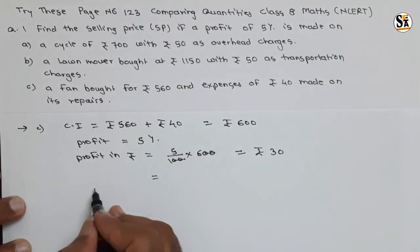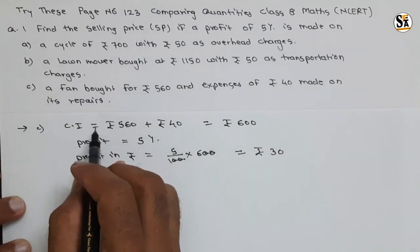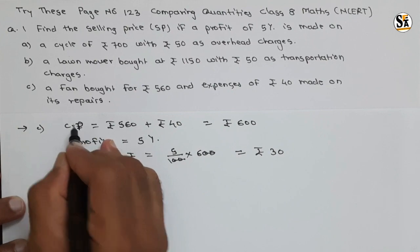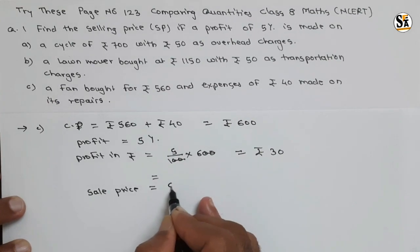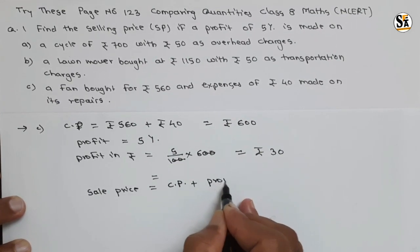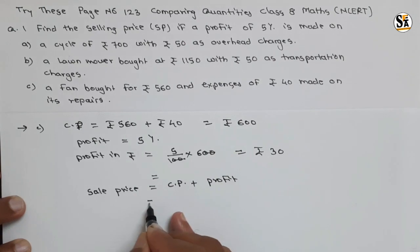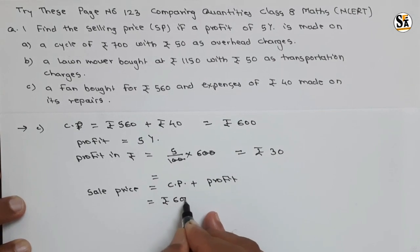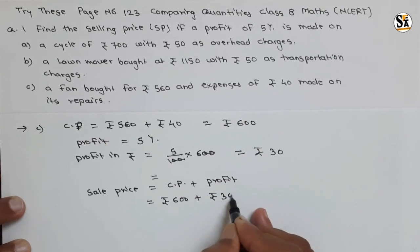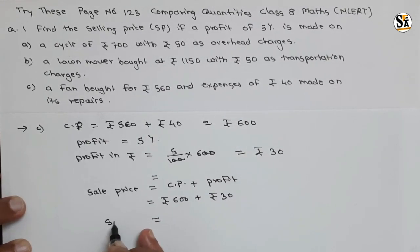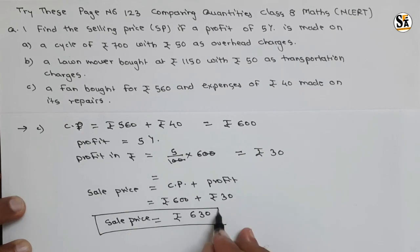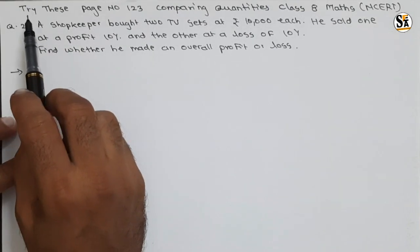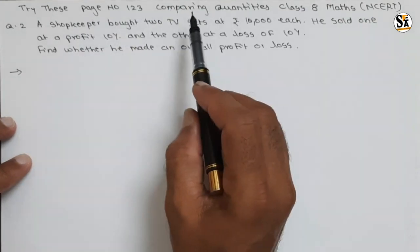Adding the profit to the cost price: sell price equals cost price plus profit. Cost price is rupees 600 plus profit of rupees 30, giving a total sale price of rupees 630. This is our third answer.